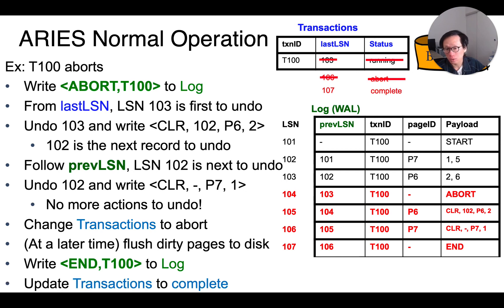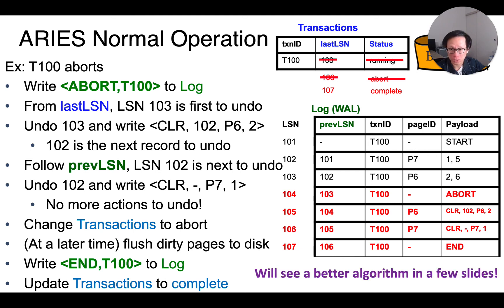So this is the basic procedure we follow for transaction abortion. We will see an improved algorithm for undoing the actions performed by a transaction in a few slides.